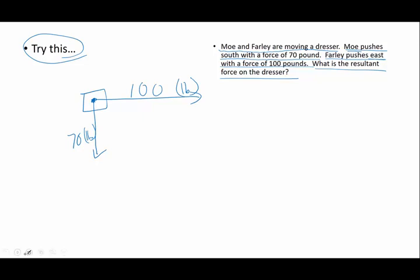Now, to add vectors, I have to move them nose to tail. So I'm going to pick up the 70, and I'm going to move it over here. And remember, it doesn't matter which one you move, because if I picked up the 100, I would end up at exactly the same spot. And then you draw the resultant, and the resultant is going to go from the tail of the first to the nose of the last.